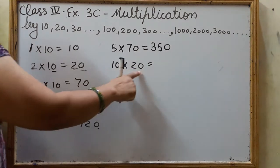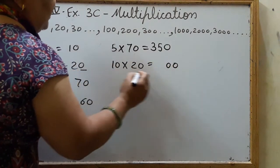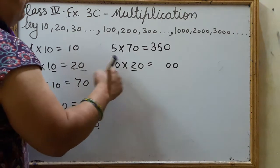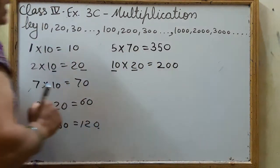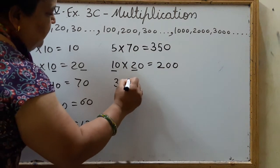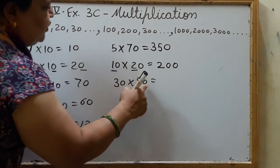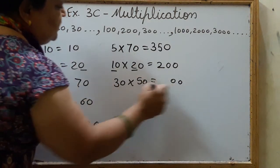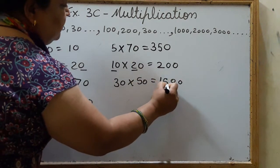Both zeros will be there and the remaining numbers will be multiplied by each other. So 2 1s are 2. See, 30 into 50. So 2 zeros and 3 5s are 15, right?